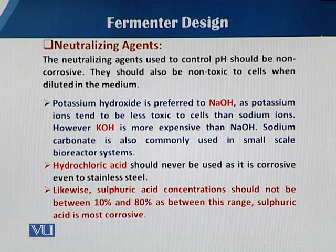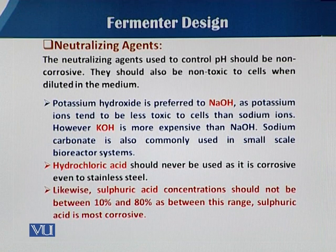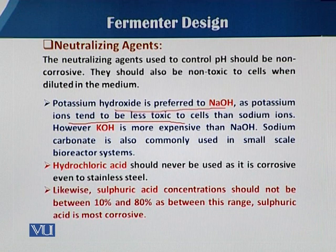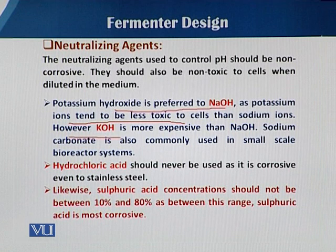The neutralizing agent used to control pH should be non-corrosive. In the case of hydrochloric acid, if the vessel body is stainless steel, we cannot use any chlorinated compounds — those compounds ending in '-ine'. They should also be non-toxic to the cells when diluted in the medium. Potassium hydroxide (KOH) is preferred over sodium hydroxide (NaOH) as an alkali, because potassium ions tend to be less toxic to cells than sodium ions. KOH is, however, more expensive than NaOH, so both the type of compound and its cost must be considered carefully.